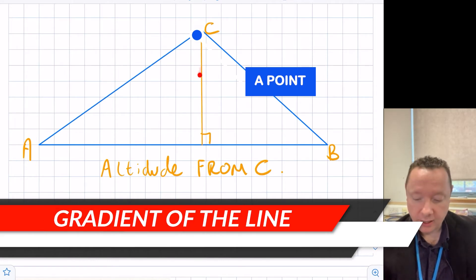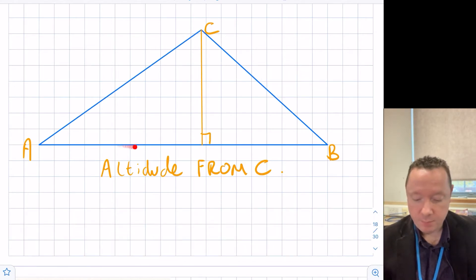Now, since the altitude cuts at right angles, if you knew the gradient of line AB, then using negative reciprocals, the rule of M1 times M2 equals minus 1 would tell you the gradient straight away of the altitude. And then you've already got a point. Assuming you've got all the points of the triangle, you would then use point C to find the equation of the altitude.